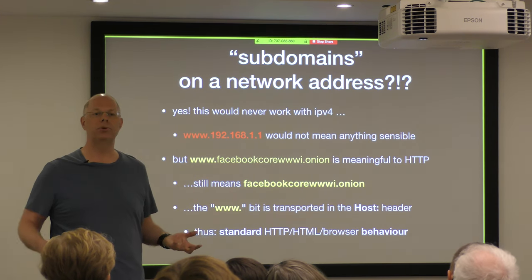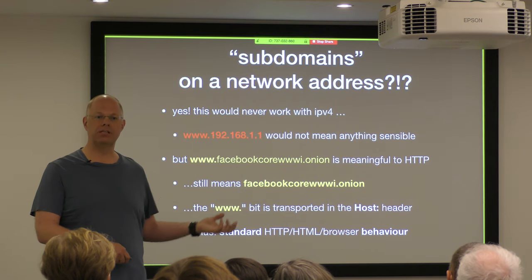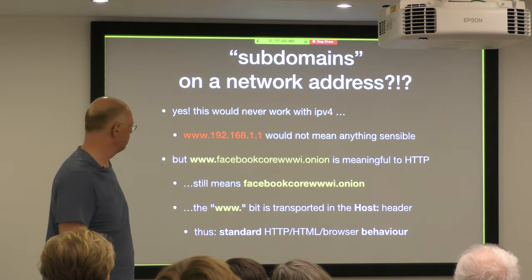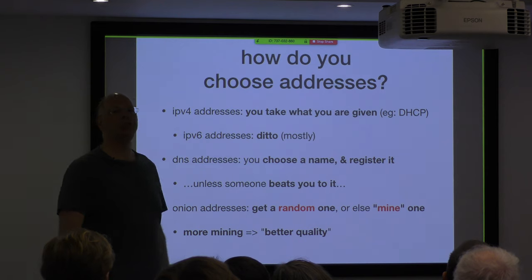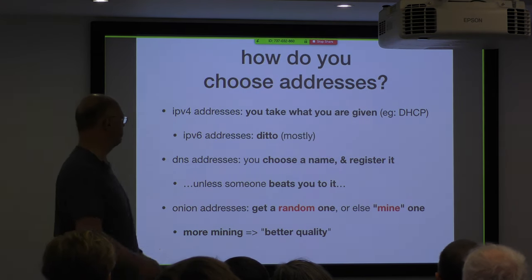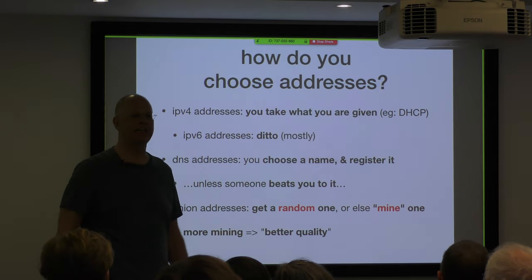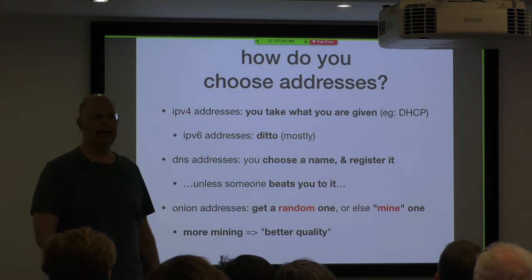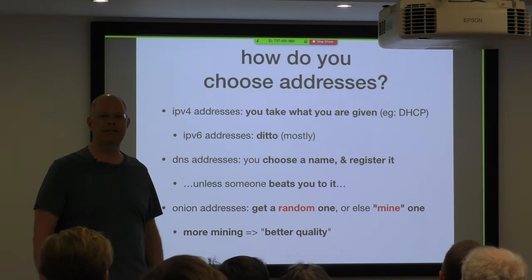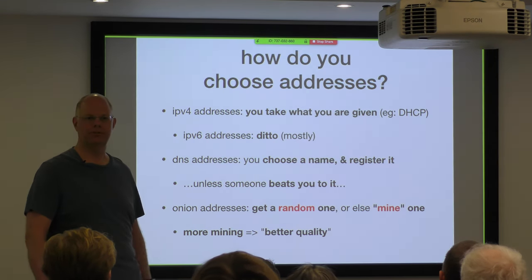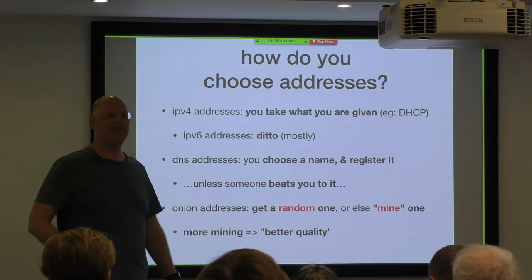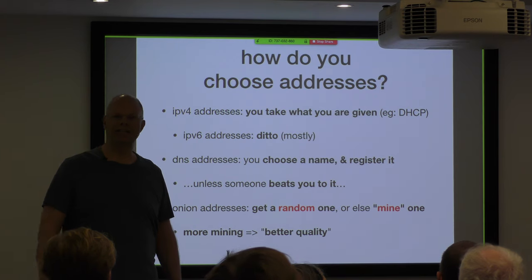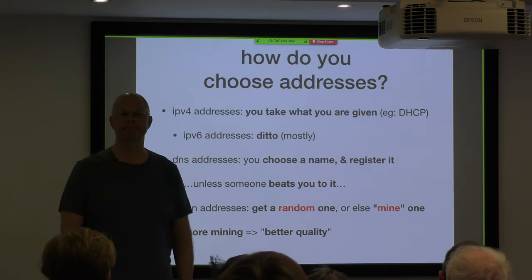By taking the layer 3 network address, rendering it as base 32 and putting the word dot onion on the end, it looks sufficiently like a DNS domain name to be treated equitably by web browsers. So you are doing layer 3 networking that looks like DNS names, which means you can have a reverse proxy with an onion address treated exactly like any website. With onion addresses, you have to mine them, a little bit like Bitcoin — you make lots of random key generation attempts until you get something which, when rendered as a text string, looks good.